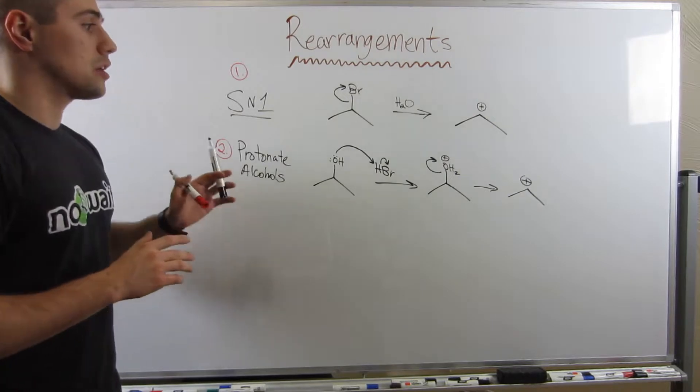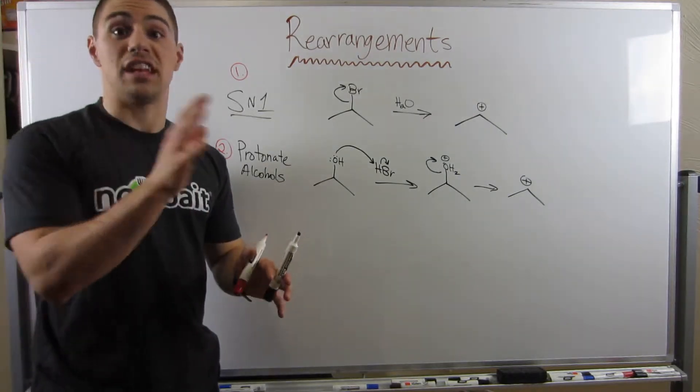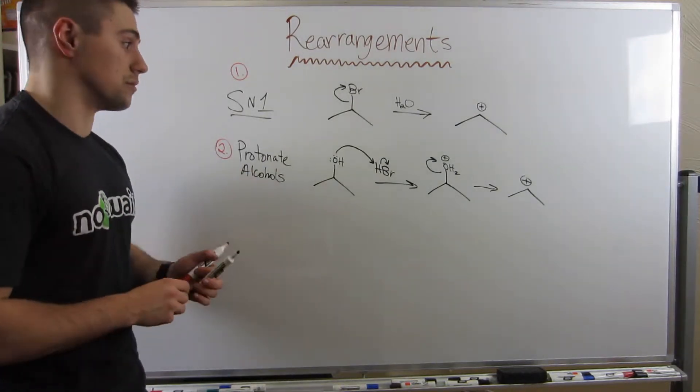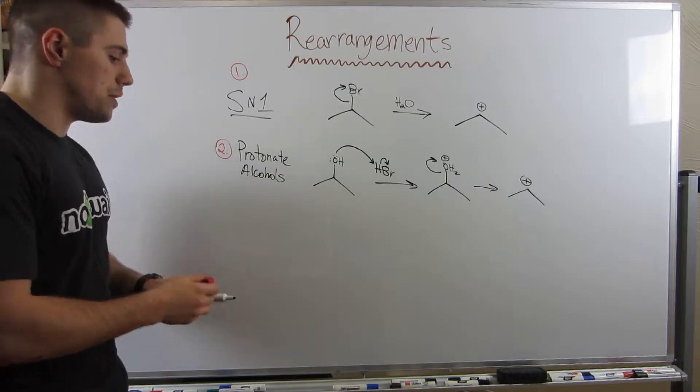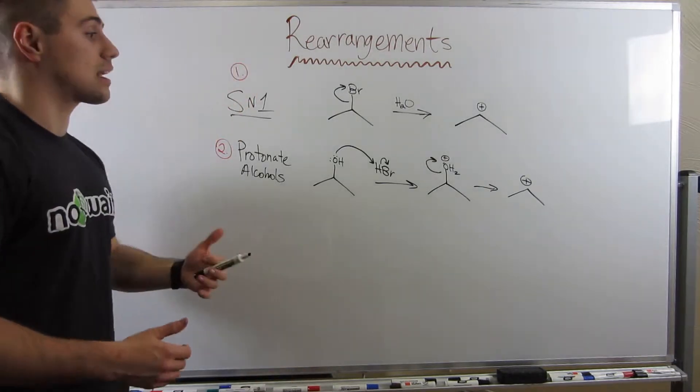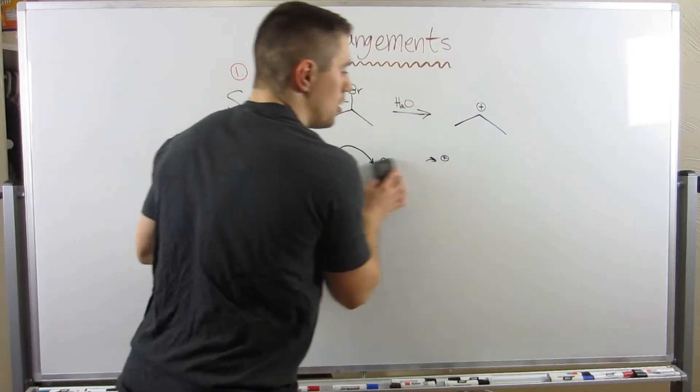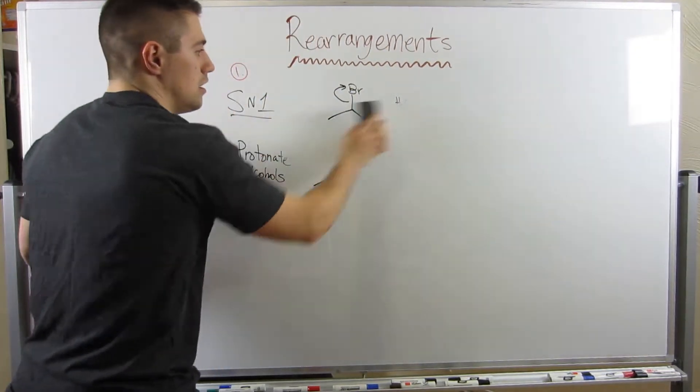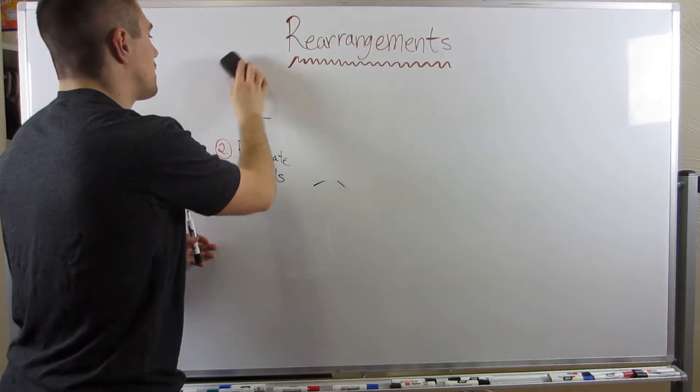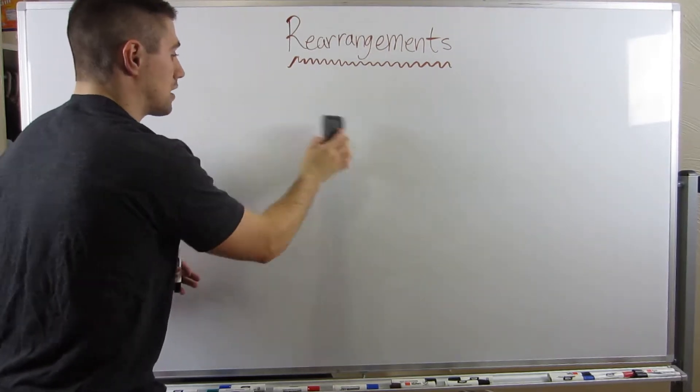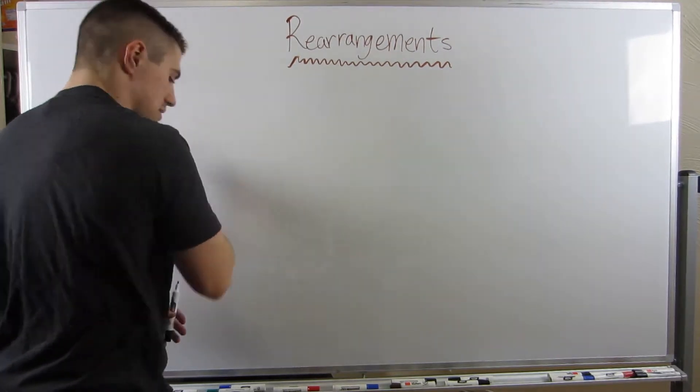So we can form carbocations by regular solvolysis through an SN1 mechanism, and we can protonate alcohols such like this. There's another way that you can make carbocations, but I want to save that for the next video in a new reaction we're going to learn. So these are the two big ways for now that I want you guys to recognize that we can make carbocations. Let me erase this and I'm going to propose to you guys a little bit of a dilemma, and we're going to reason through this dilemma together.